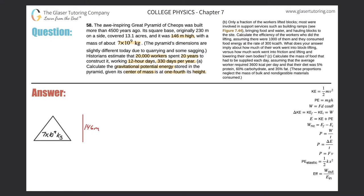So here's the mass — it's 7 times 10 to the 9 kilograms and they told us that it was 146 meters high. It says the center of mass is one-fourth of its height. So that's going to be important in terms of calculating the gravitational potential energy, because we have to calculate the height relative to the center of mass of this pyramid. So it's about one-fourth of the height.